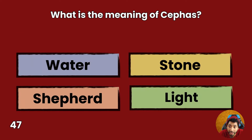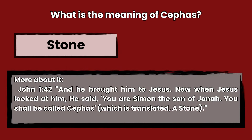Question 47: What is the meaning of Cephas? Water, stone, shepherd, or light? Answer: Stone. John 1:42 — And he brought him to Jesus. Now when Jesus looked at him, he said, You are Simon the son of Jonah. You shall be called Cephas, which is translated a stone.